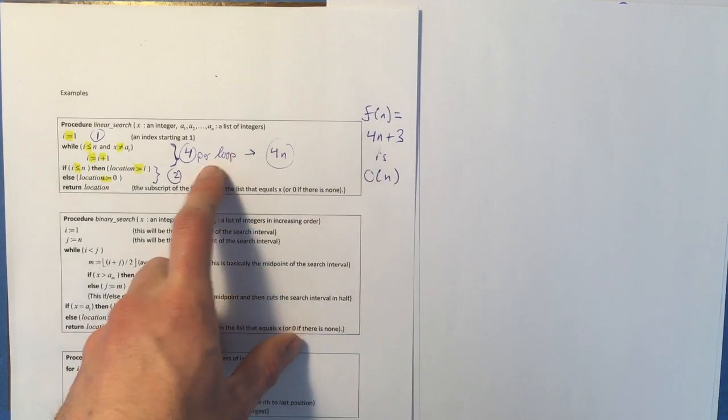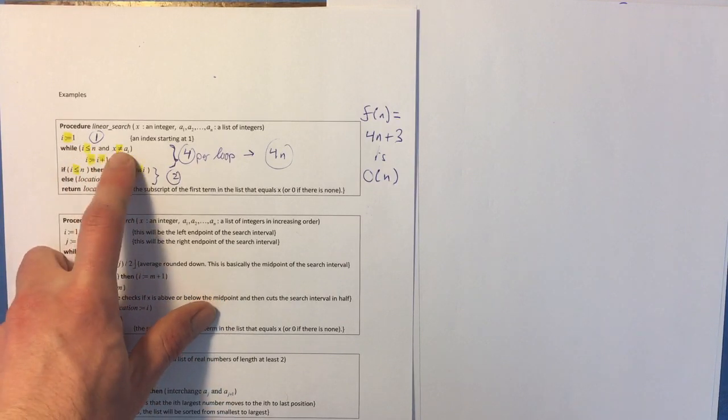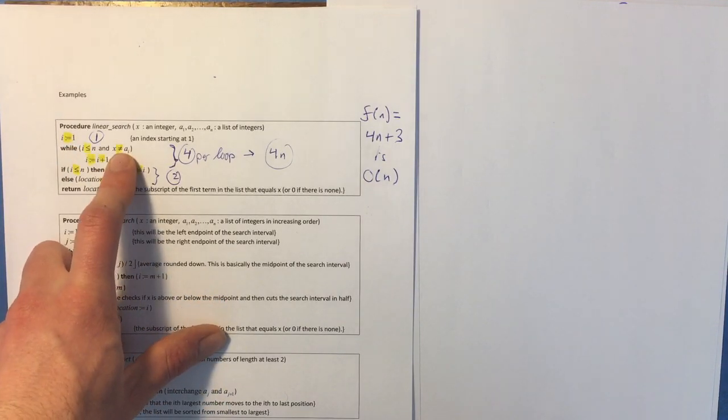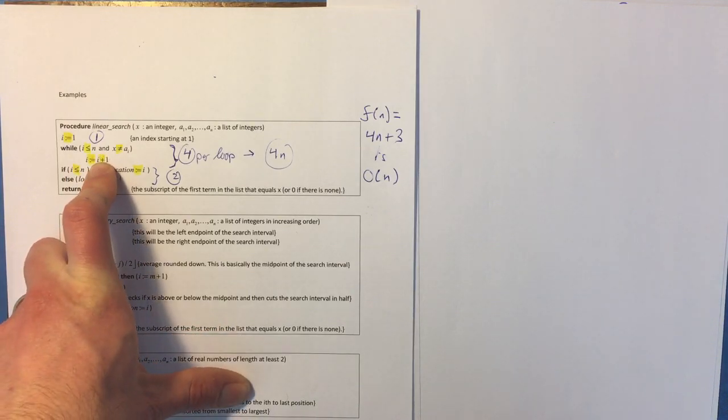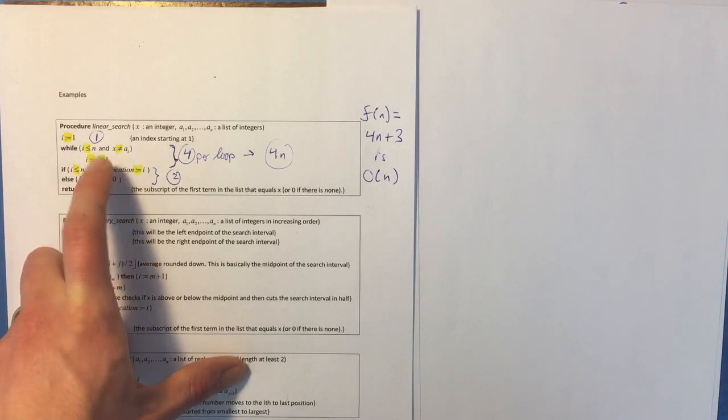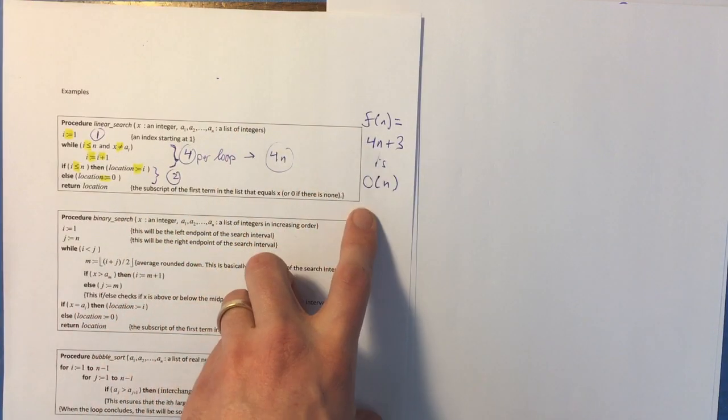I don't even care that much about how many of these things I'm counting. If I don't count the comparisons involved in checking the while loop, but even if I just count the addition and this assignment statement, even if I just count the addition, this would be 1n instead of 4n. It would still be big O of n.